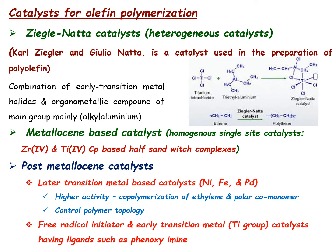The Ziegler-Natta catalyst, developed by Ziegler and Natta, is used for the preparation of polyolefins. It is derived from the combination of early transition metal halides — particularly titanium chloride — and an organometallic compound of the main group, mainly trialkyl aluminum species. When combined, they form a metal-alkyl bond at the titanium center via reaction between alkyl aluminum and titanium chloride, creating an intermediate on the titanium surface with a vacant site where the olefin coordinates.